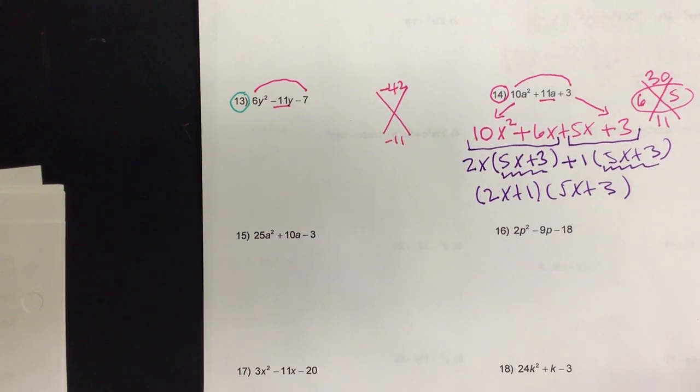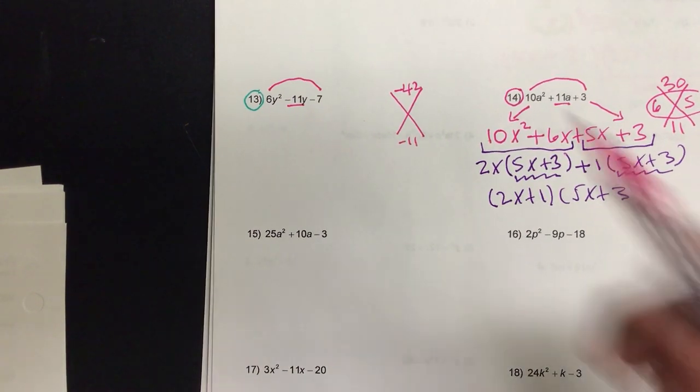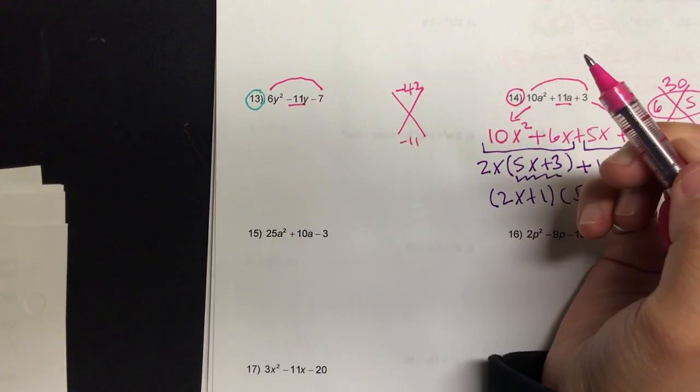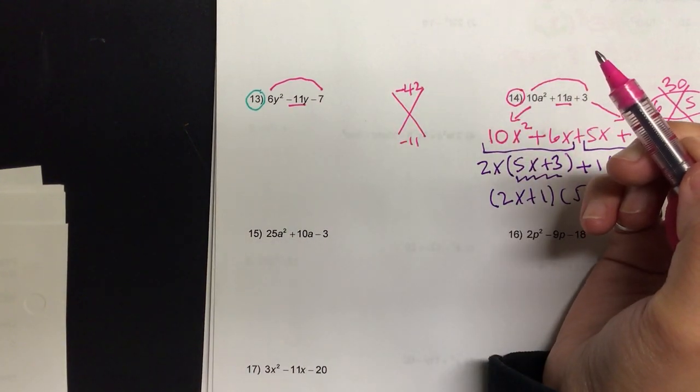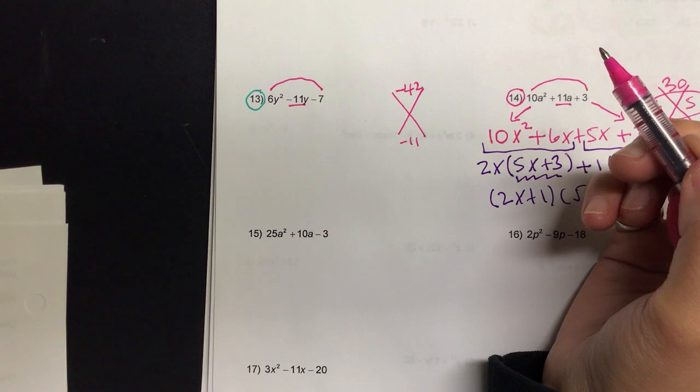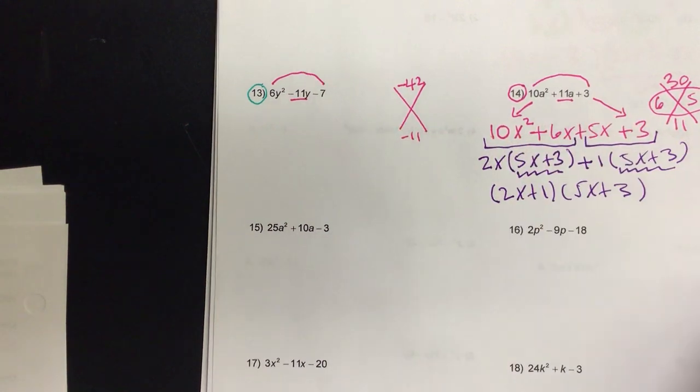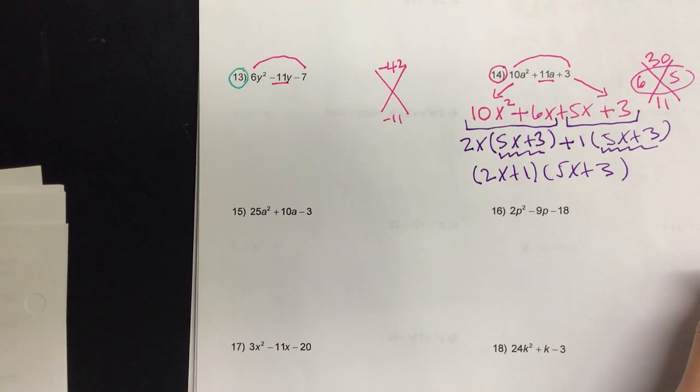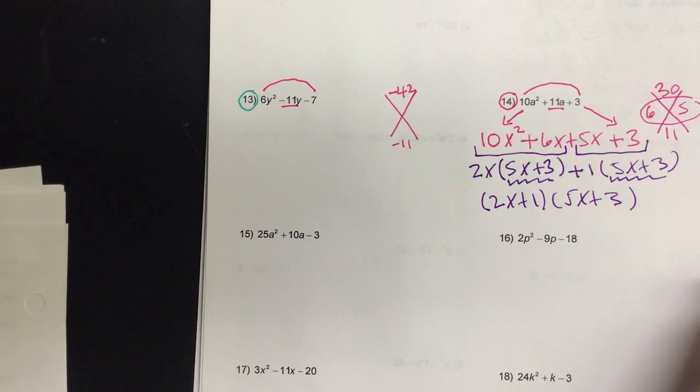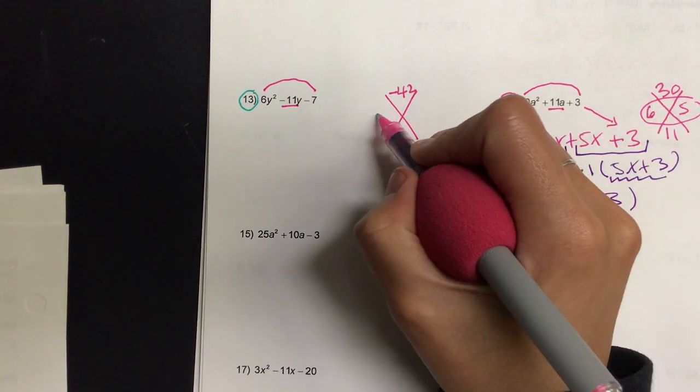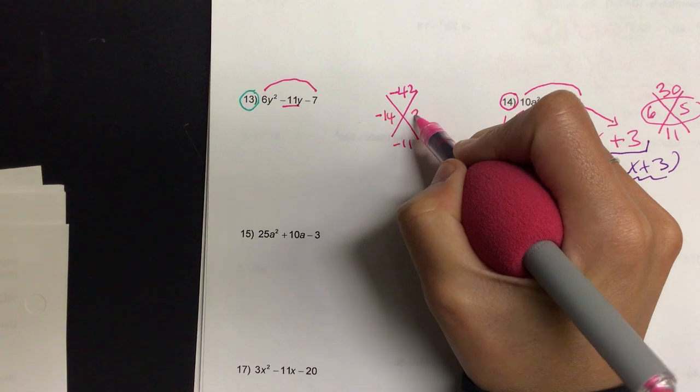So what two numbers would satisfy the product of negative 42 and sum of negative 11? 6. 6 and? 6 and 7. 7. Negative 6 and 7, I don't see it. No. Oh, 5 and what? 21 and 10? 14 and negative 3. 21 and 3. Wait, 14 and 3. 14 and 3? 14 and 3. Negative 14 and 3? Nice.